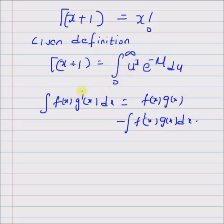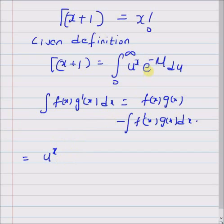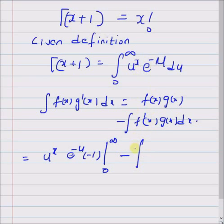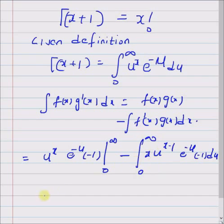Assuming f(x) = u^x and g'(x) = e^(-u), the first function u^x does not change, and the integral of e^(-u) is e^(-u) times minus 1, with limits from 0 to infinity. The second term involves the derivative of u^x, which is x times u^(x-1), multiplied by the integral of e^(-u), giving e^(-u) times minus 1, du, from 0 to infinity.